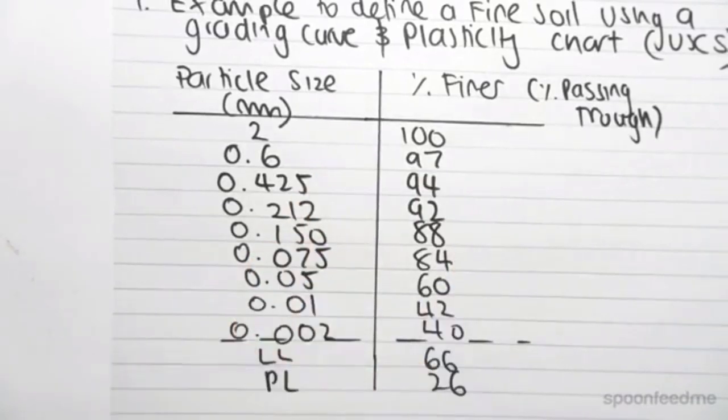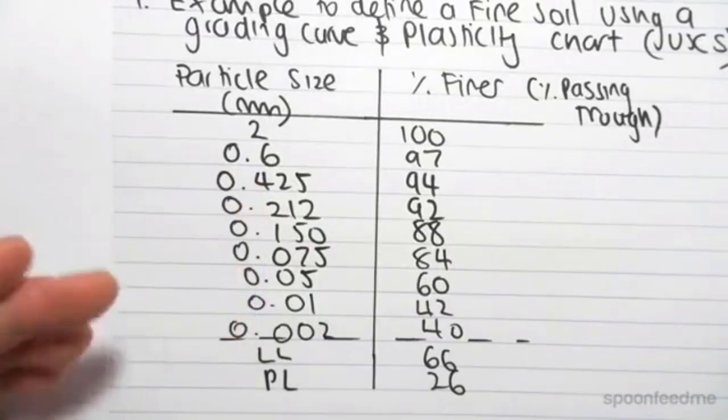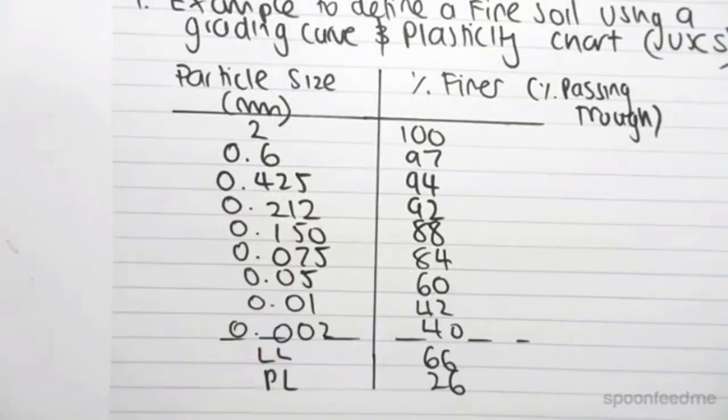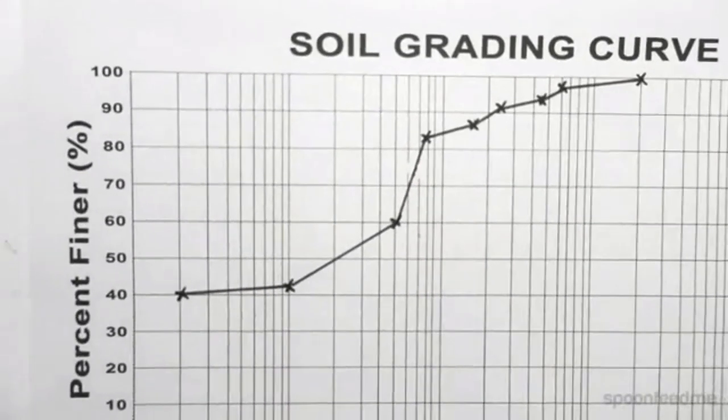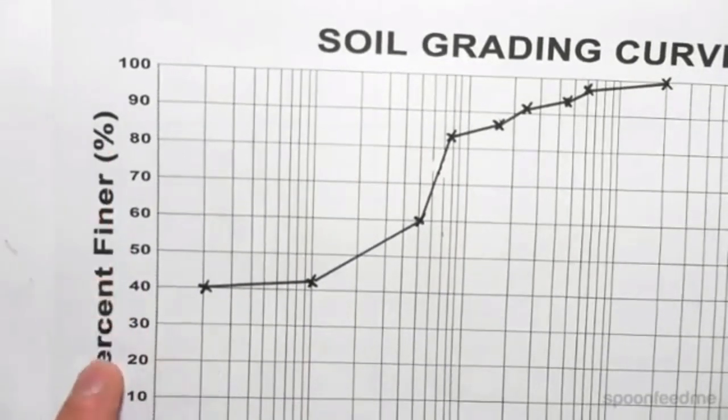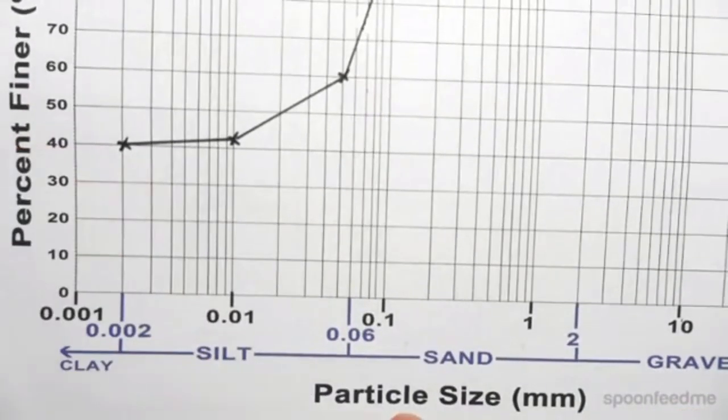So this data might have been obtained from a laboratory experiment where we use sieves and a hydrometer. So what we can do with these values is we can plot on a soil grading curve. And this is very simple. All it is is the percents finer against the particle size.